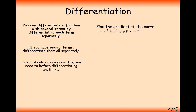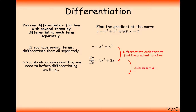Let's have a go at this one. We're now going to use the differential to find gradients at certain points. Find the gradient of the curve y equals x cubed plus x squared when x equals 2. We differentiate the terms separately: dy/dx equals 3x squared from the x cubed function and 2x from the x squared function. Now plug in x equals 2. So m equals 3 times 2 squared plus 2 times 2, substituting in 2 for x, and we get 16. The gradient at x equals 2 is 16.